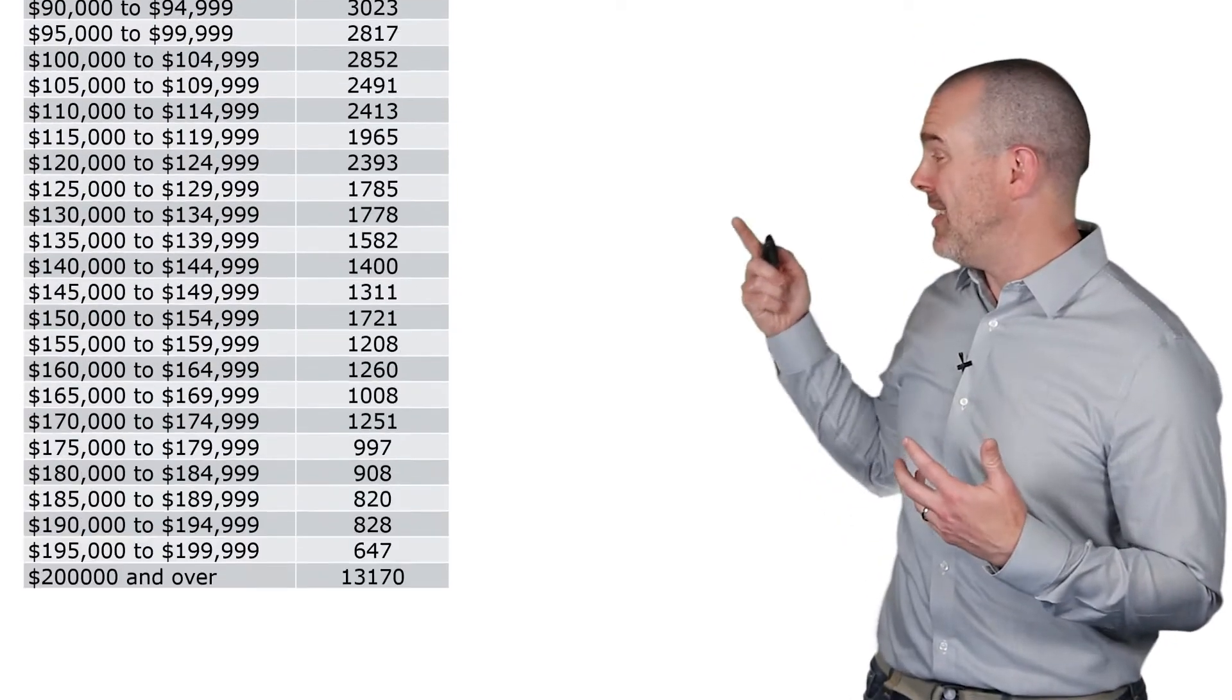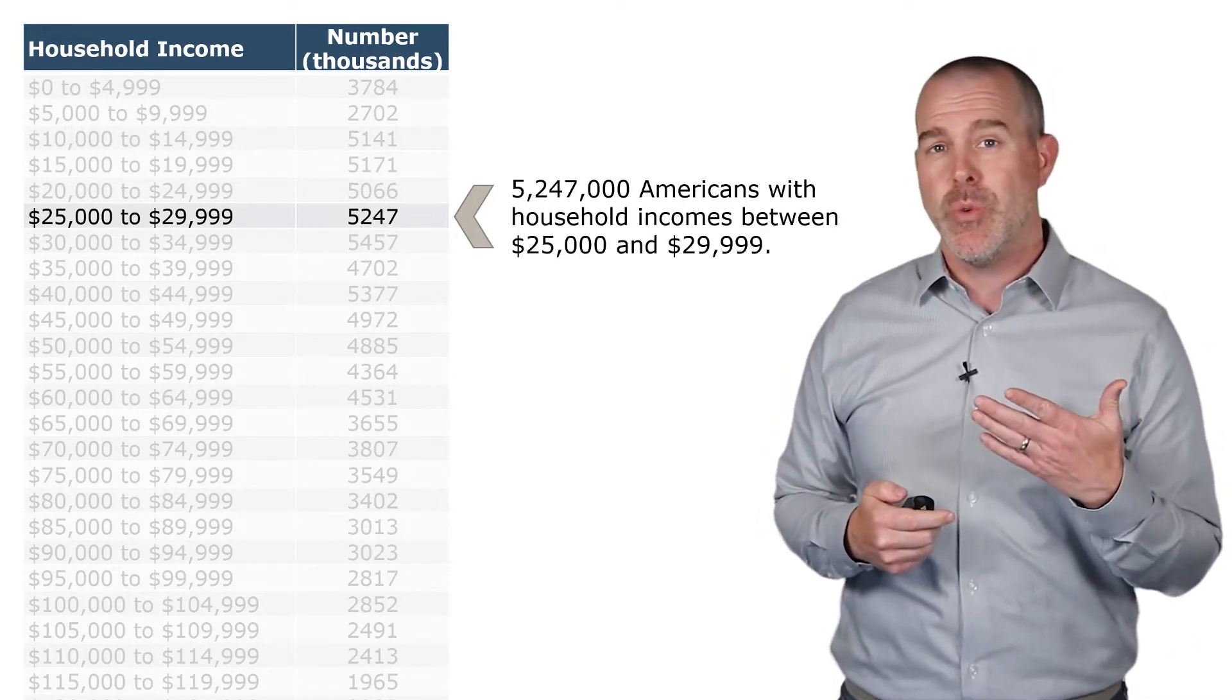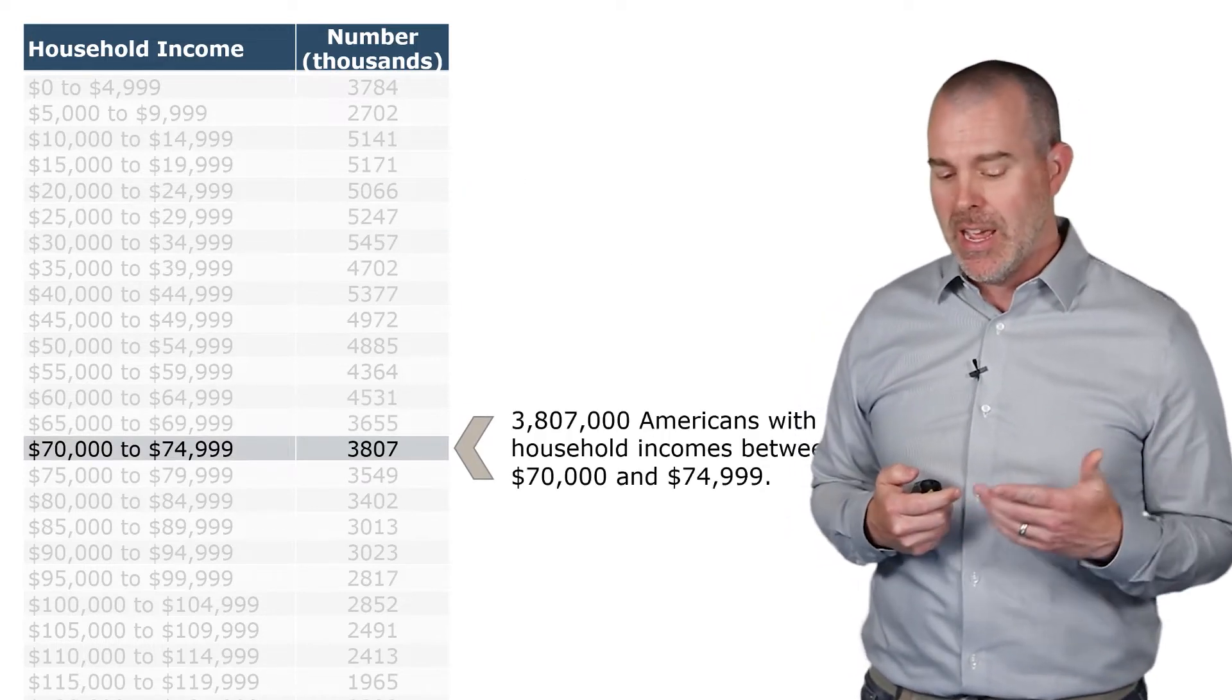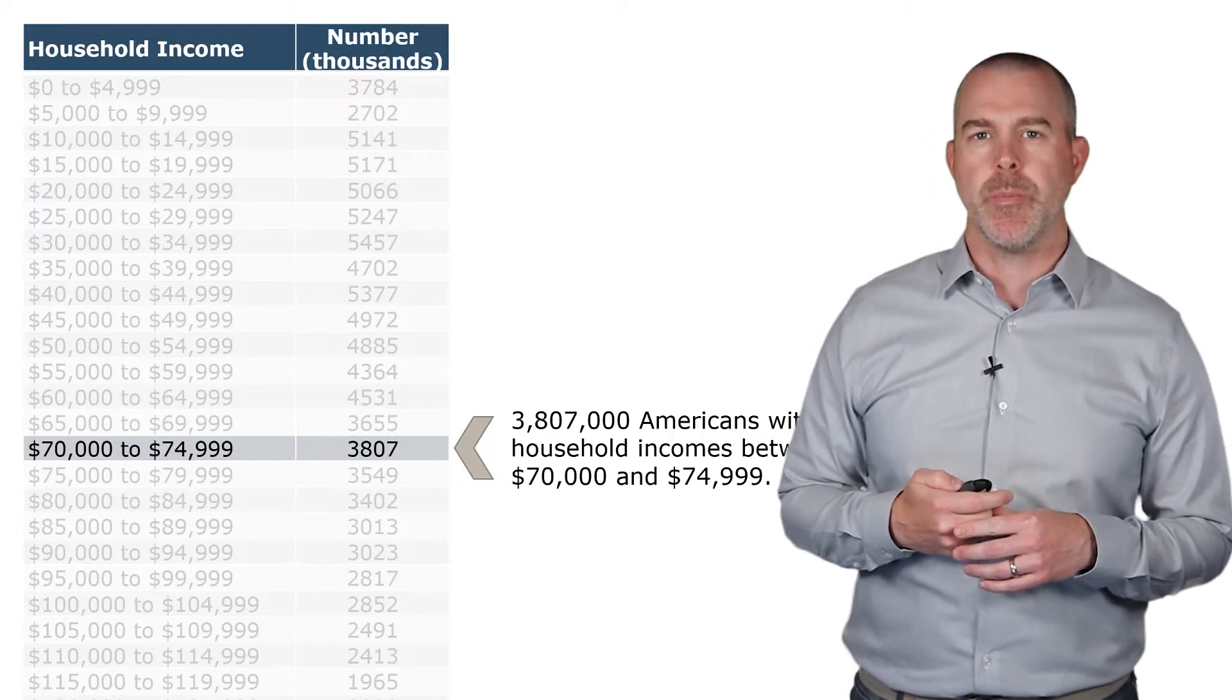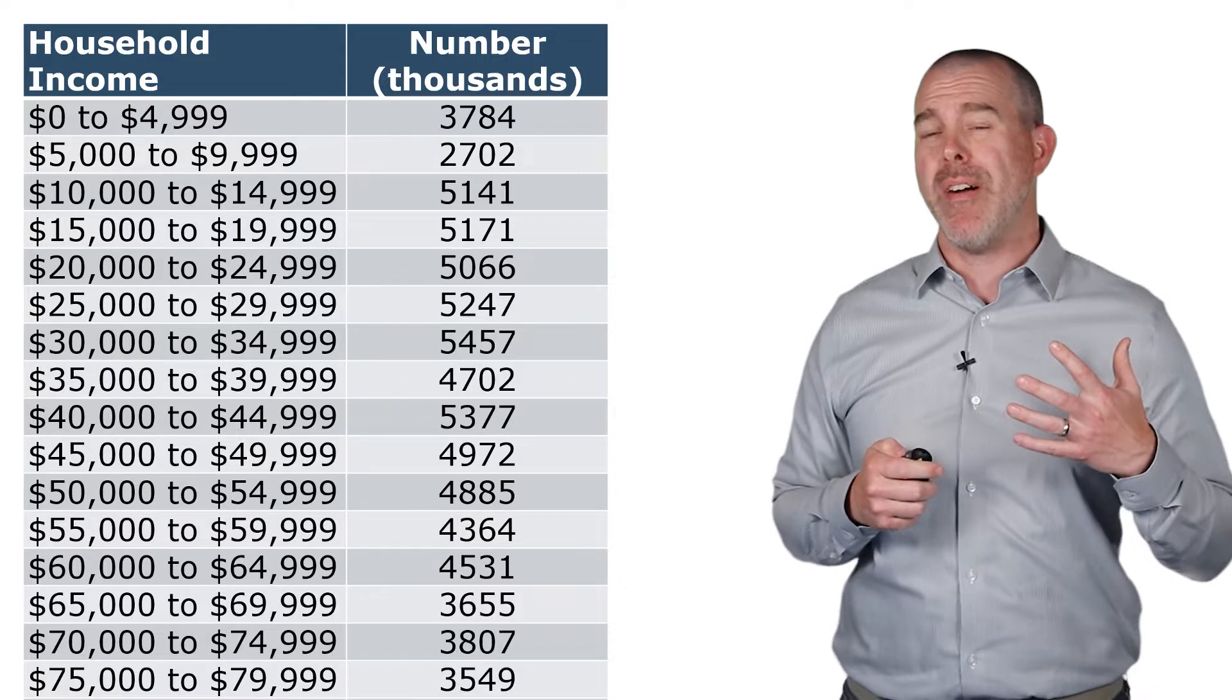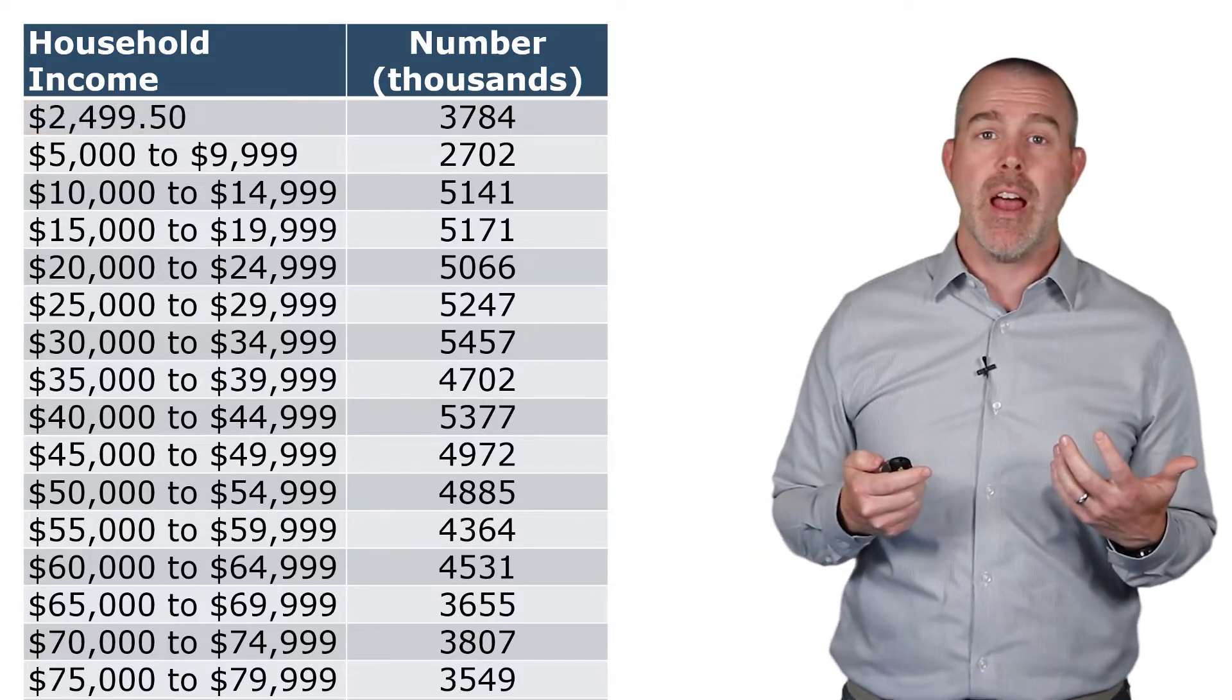If we look at these in table form, it's this long table with all these different classes. If we want to dive in on one: $25,000 to $29,999 means there's 5,247 thousand. So that means 5 million, 247 thousand. If we scroll down, look at another one: between $70,000 and $74,999, there's 3 million, 807 thousand households there with incomes between those two. So here's what we're going to do. We're going to zoom in on this and we're going to look at this first class, the $0 to $4,999. We have a couple of options here. One option is to take the $0 to $4,999 and treat all of them as the average of those: $2,499.50.